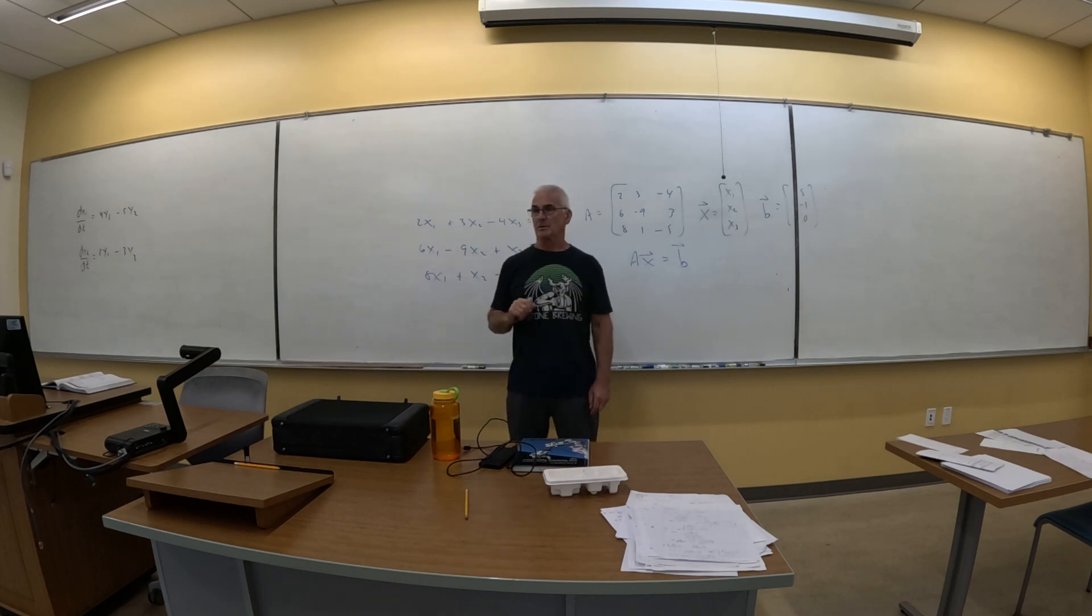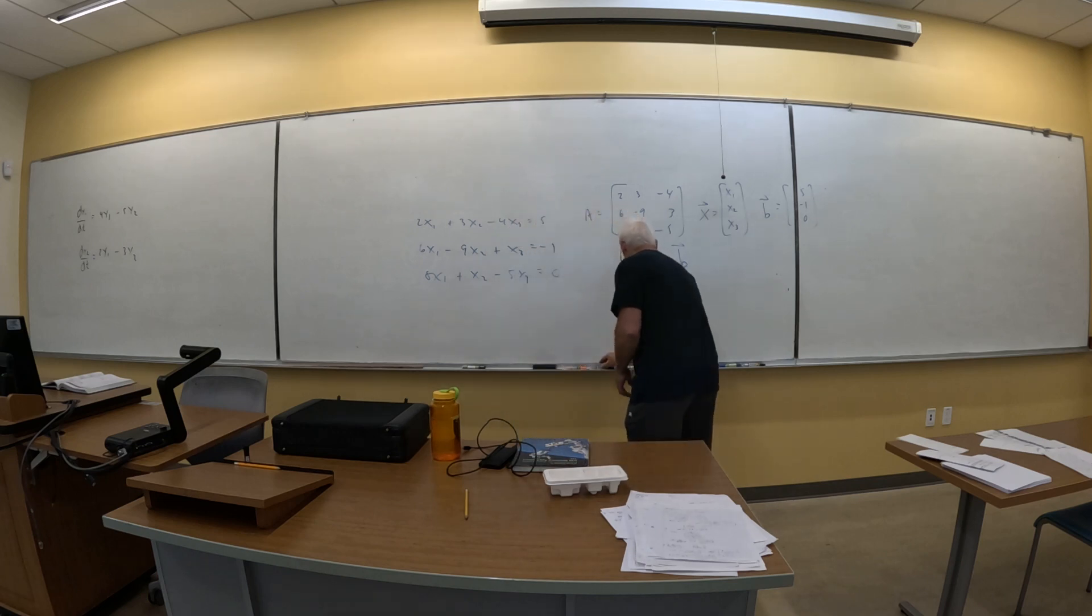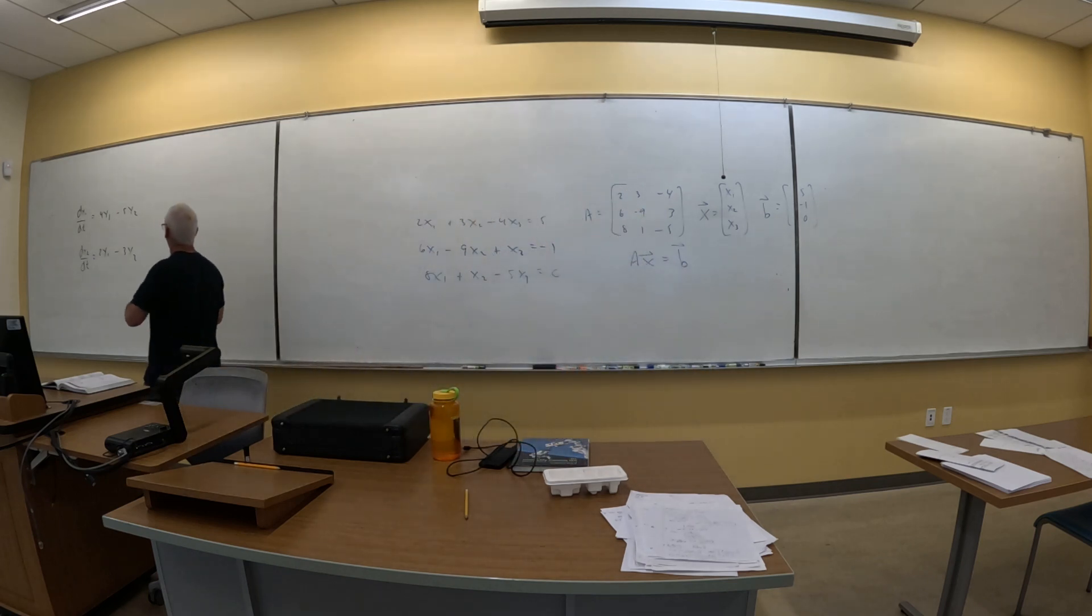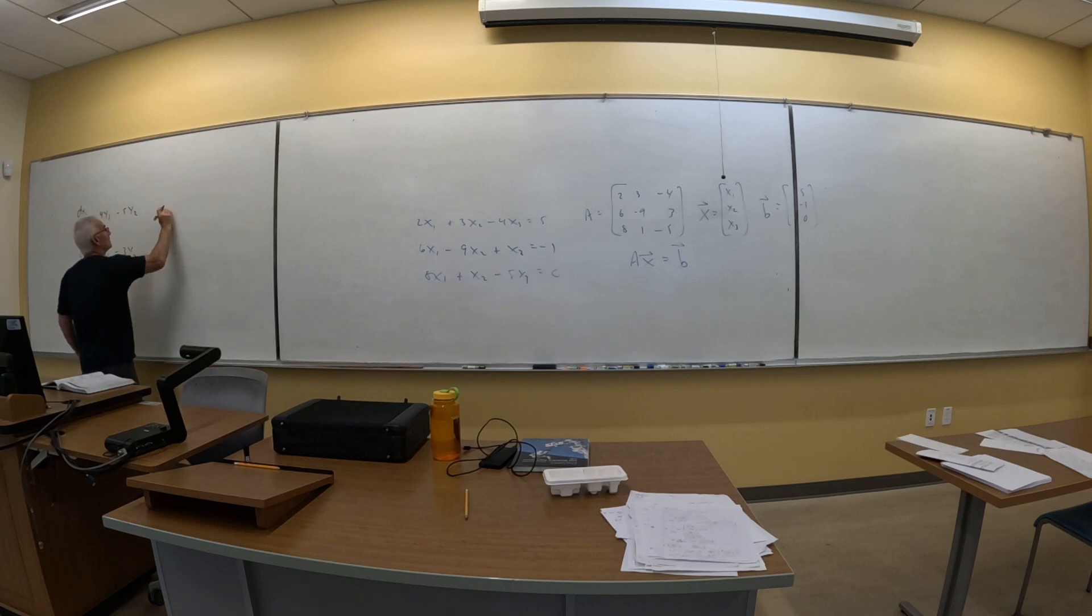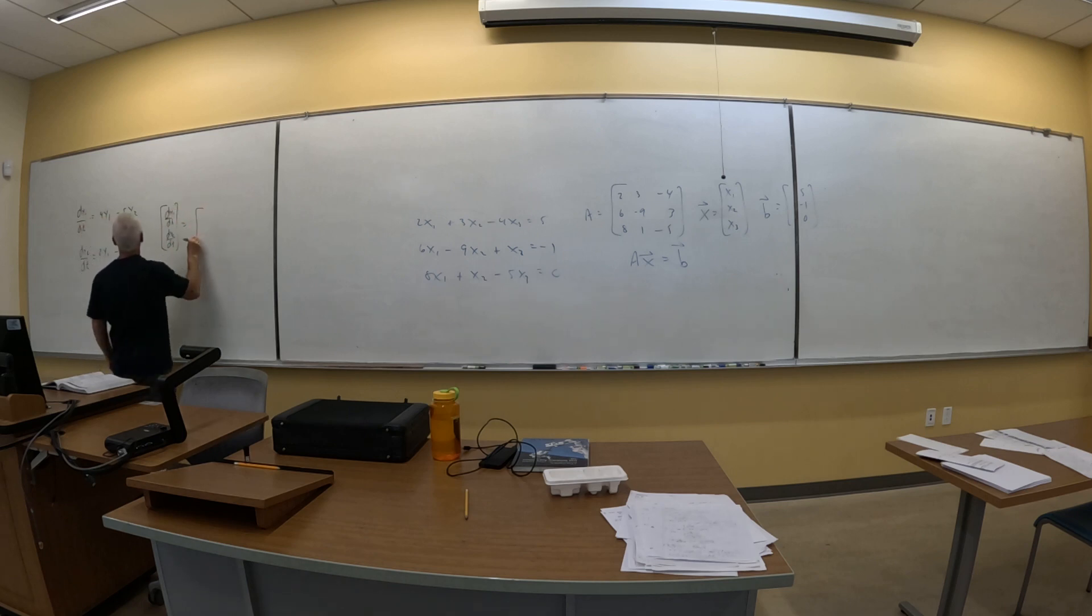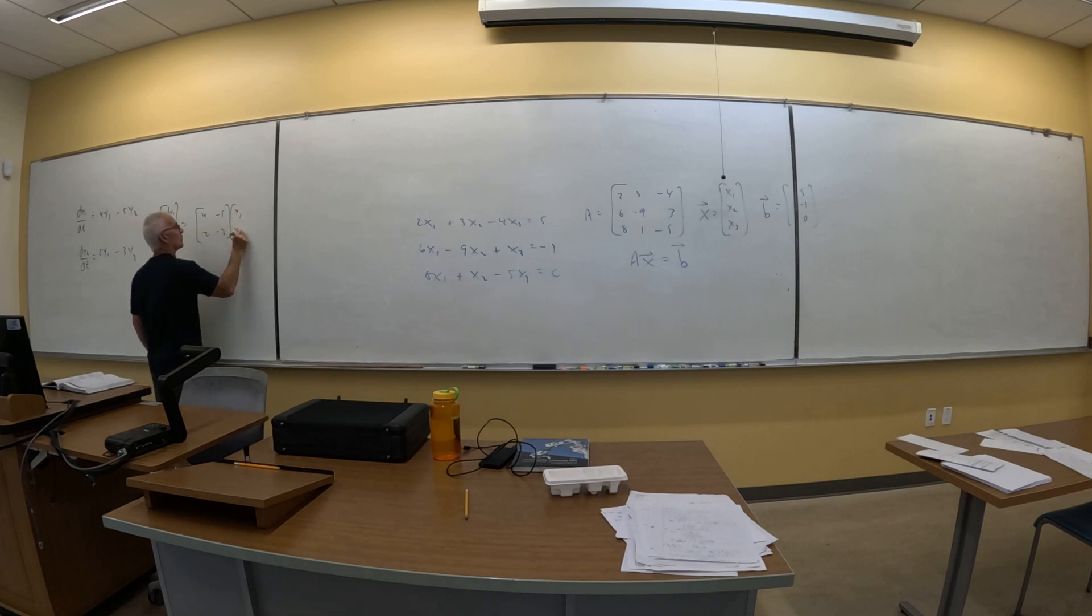I want to write this as a matrix product. So I'm going to write it like this: dy1/dt, dy2/dt equals [4 -5; 2 -3] times [y1; y2]. And quick check, matrix multiplication would be this plus this, that would be my first entry. This plus this, that would be my second entry. Then I equate the two, I get this back again. That's how you know you did it right.